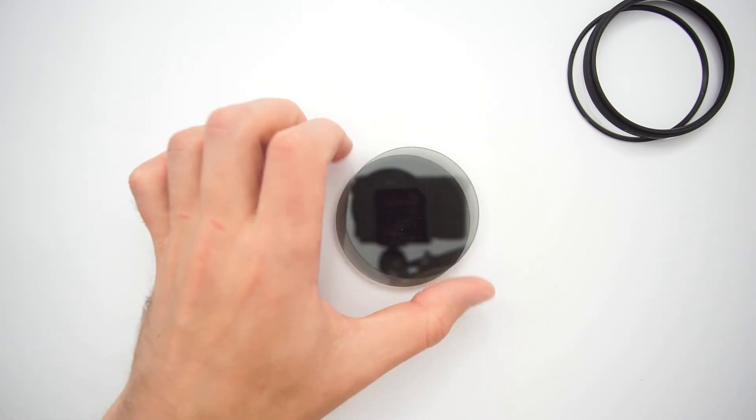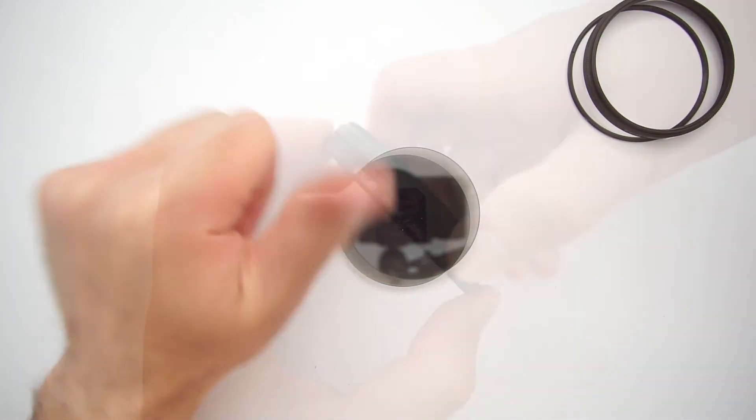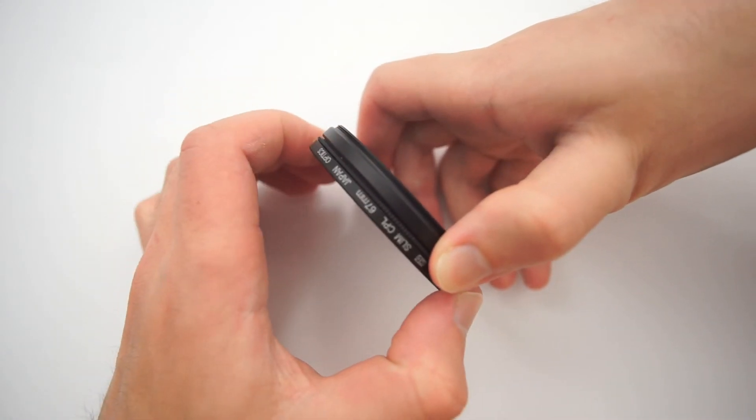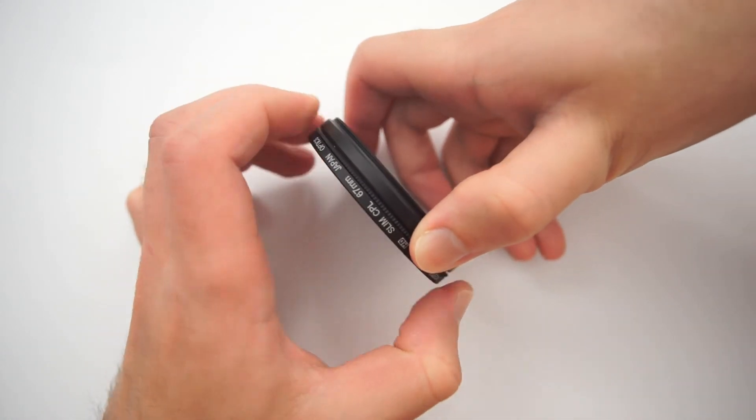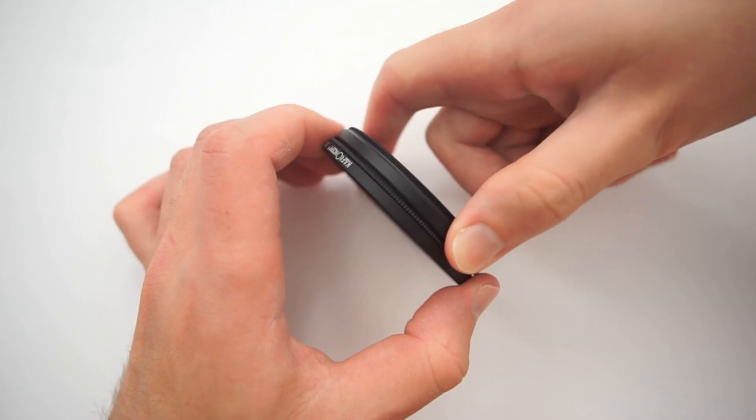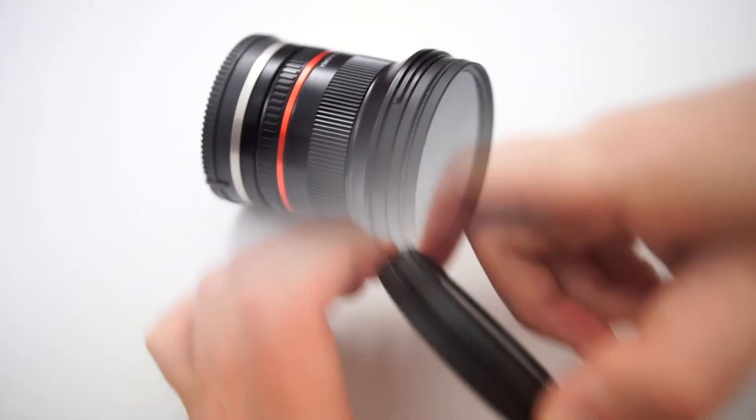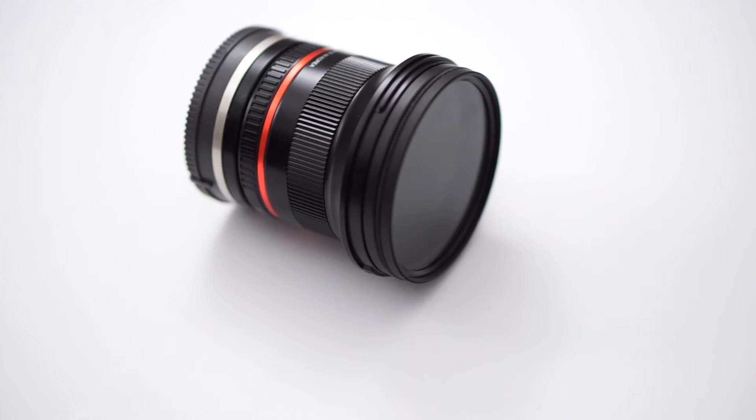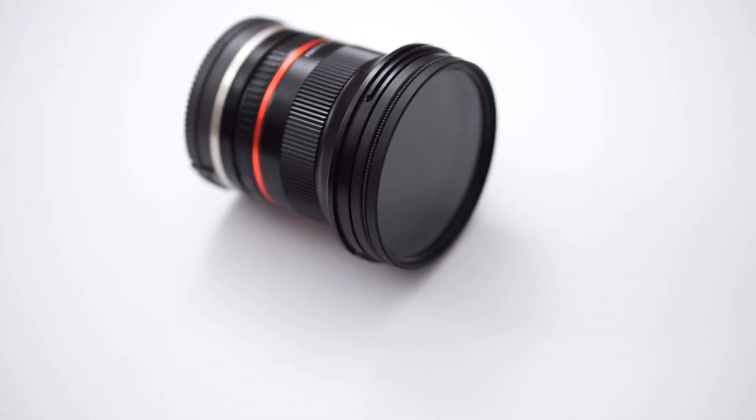Ok, now when we found the right direction, simply reassemble filters. Here's how our DIY ND filter should look assembled. And here how it looks on the lens. Pretty neat as for me.